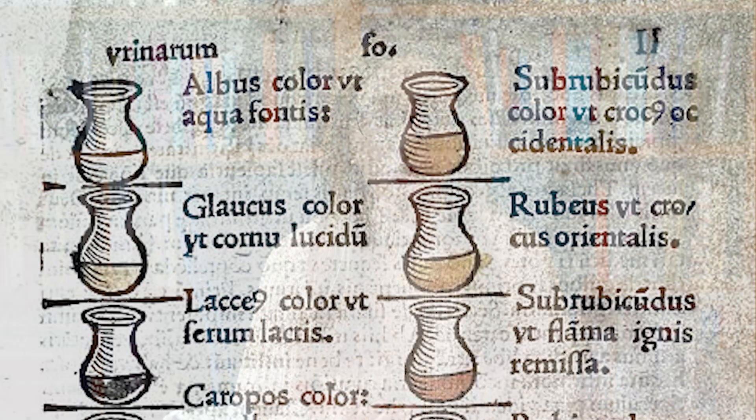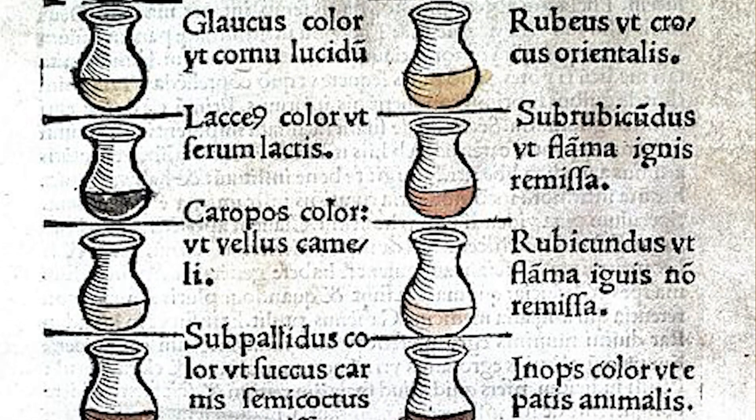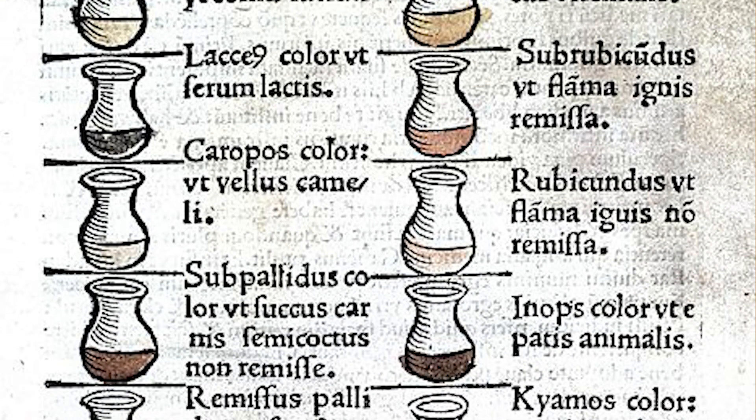By the 16th century, these urine charts were available in printed books and readers could have them colored, making them much more accessible. Uroscopy was a testament to a doctor's skill and it could tell much about a patient's current bodily state and what the future might hold, especially where having children was concerned. So, let's go back to the intriguing idea of using urine to learn about fertility.